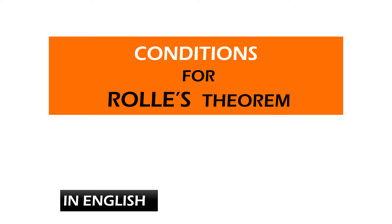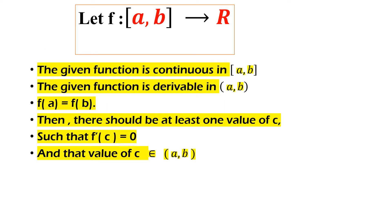Today we shall be discussing the conditions for Rolle's theorem. Let f be a function on [a, b] which belongs to some real numbers. The theorem says that the given function has to be continuous in the closed interval [a, b]. Whatever function will be given to you in the question, it has to be continuous. That is the first condition.